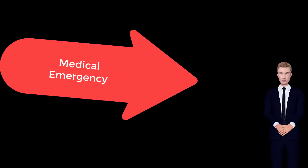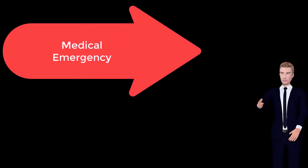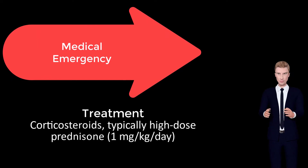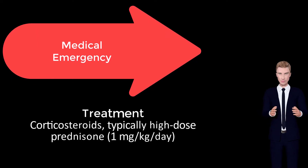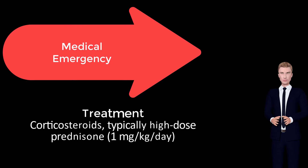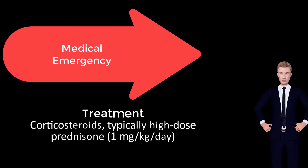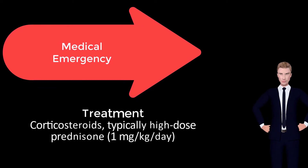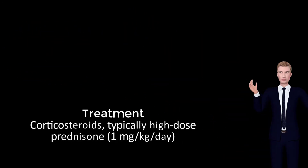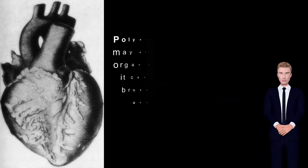Giant cell arteritis is considered a medical emergency due to the potential of irreversible vision loss. Corticosteroids, typically high-dose prednisone 1 mg/kg/day, should be started as soon as the diagnosis is suspected, even before the diagnosis is confirmed by biopsy, to prevent irreversible blindness secondary to ophthalmic artery occlusion.